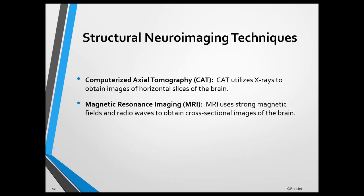Magnetic resonance imaging uses strong magnetic fields and radio waves to obtain cross-sectional images of the brain.